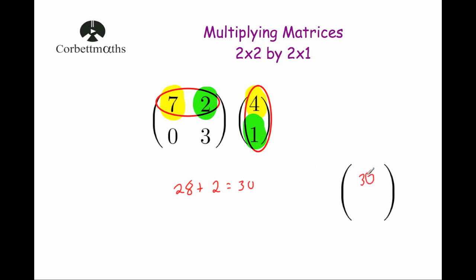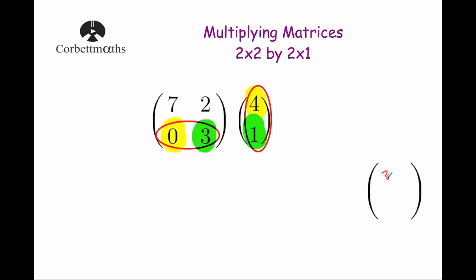So we put the number 30 at the top of the matrix. Now, what we're going to do is multiply the second row by the column — the 0 and the 3 by the 4 and the 1. We multiply the number on the left by the number on the top, and the number on the right by the number beneath it. So 0 times 4 is 0, and 3 times 1 is 3, and we add those together: 0 plus 3 is 3. So if we were asked to multiply the matrix 7, 2, 0, 3 by the matrix 4, 1, the answer would be 30, 3.